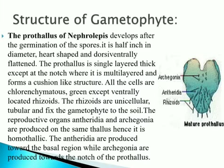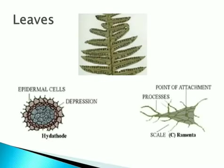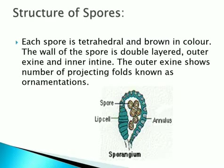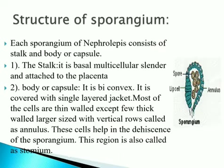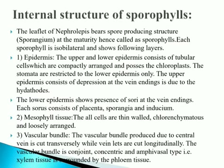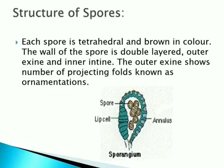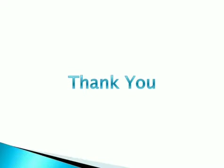In this practical, we take a section of the leaf and observe the structure of the sporangium. From this leaf section, different structures are seen under the microscope — epidermis, mesophyll tissue, vascular bundle, and sporangia. I hope you have understood this practical. Thank you very much.